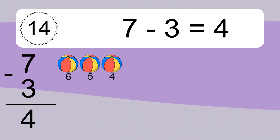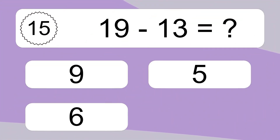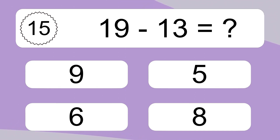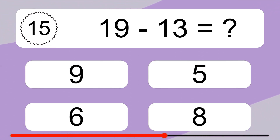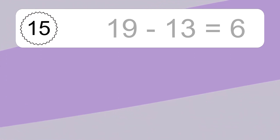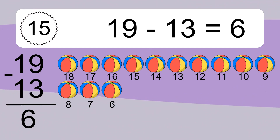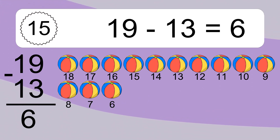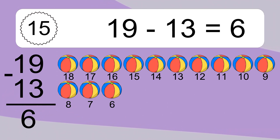Let's count it: 6, 5, 4. 19 minus 13 equals 6. Let's count it: 18, 17, 16, 15, 14, 13, 12, 11, 10, 9, 8, 7, 6.